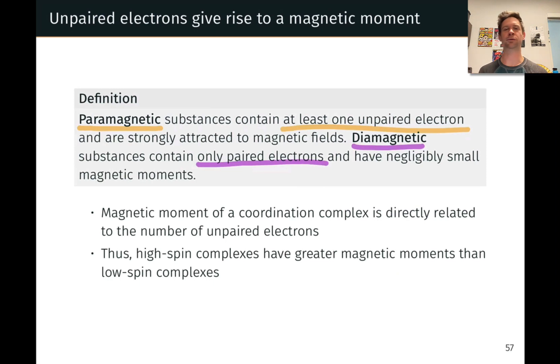Diamagnetic substances contain only paired electrons, and they have essentially negligible magnetic properties, weak repulsion from a magnetic field, almost undetectably weak repulsion from magnetic fields, essentially not much magnetism at all.